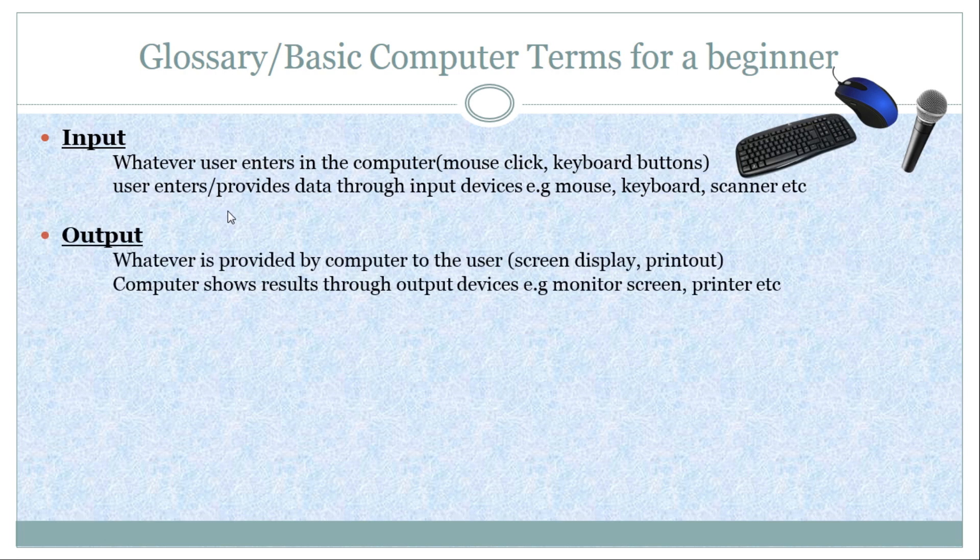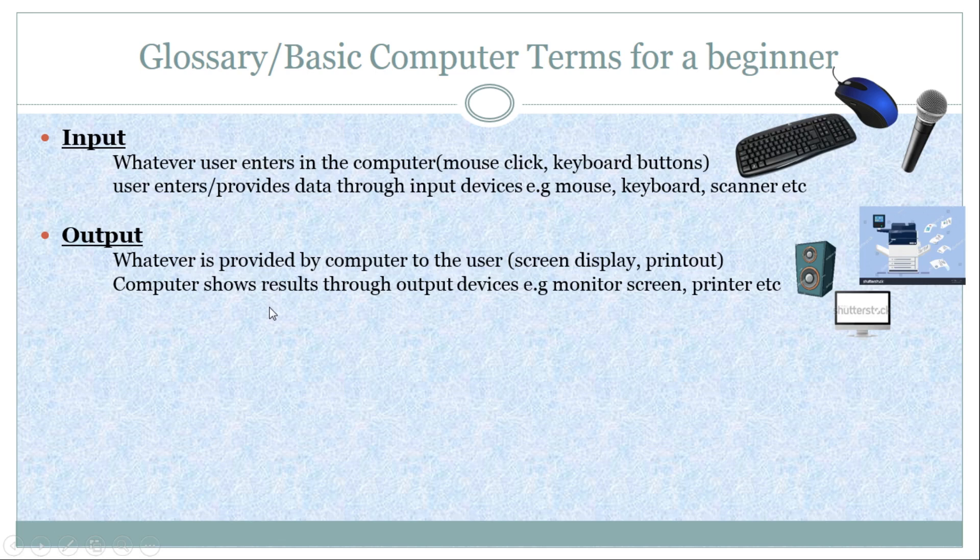Next we come to the concept of output. Output is whatever is provided by the computer to the user, such as whatever is shown on the computer screen, or the printout from the printer is also computer output. The computer shows results through output devices, for example, monitor screen, printer, etc.